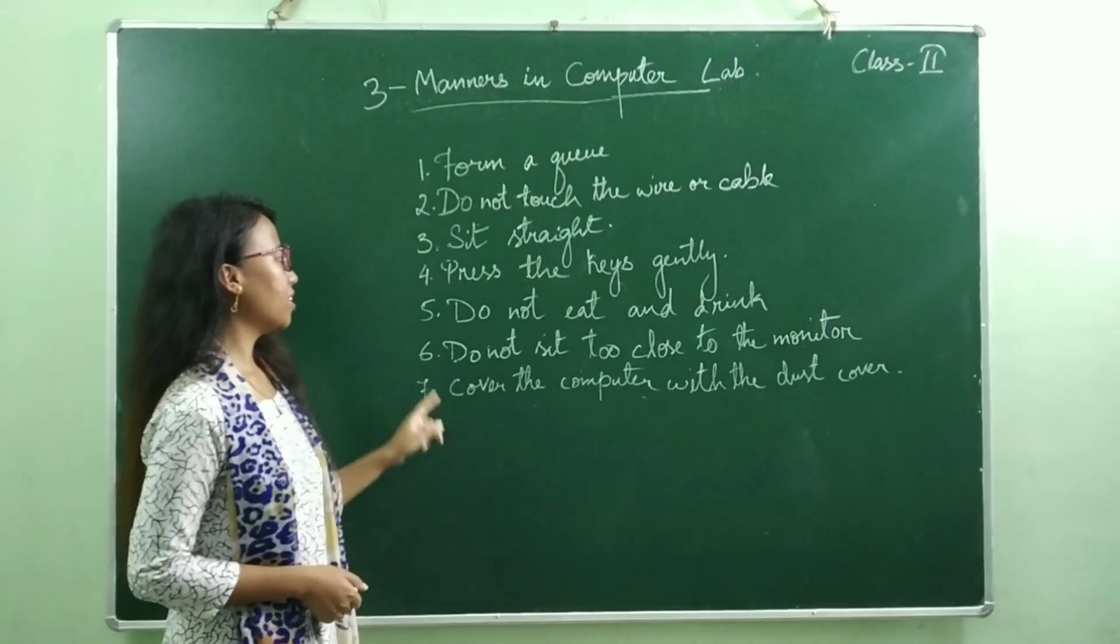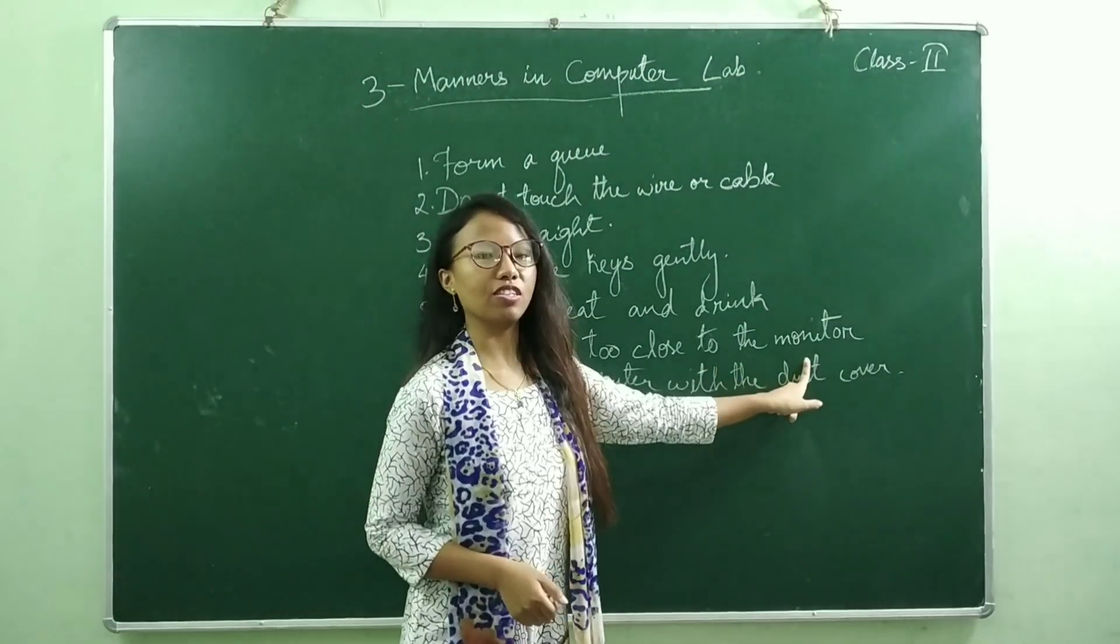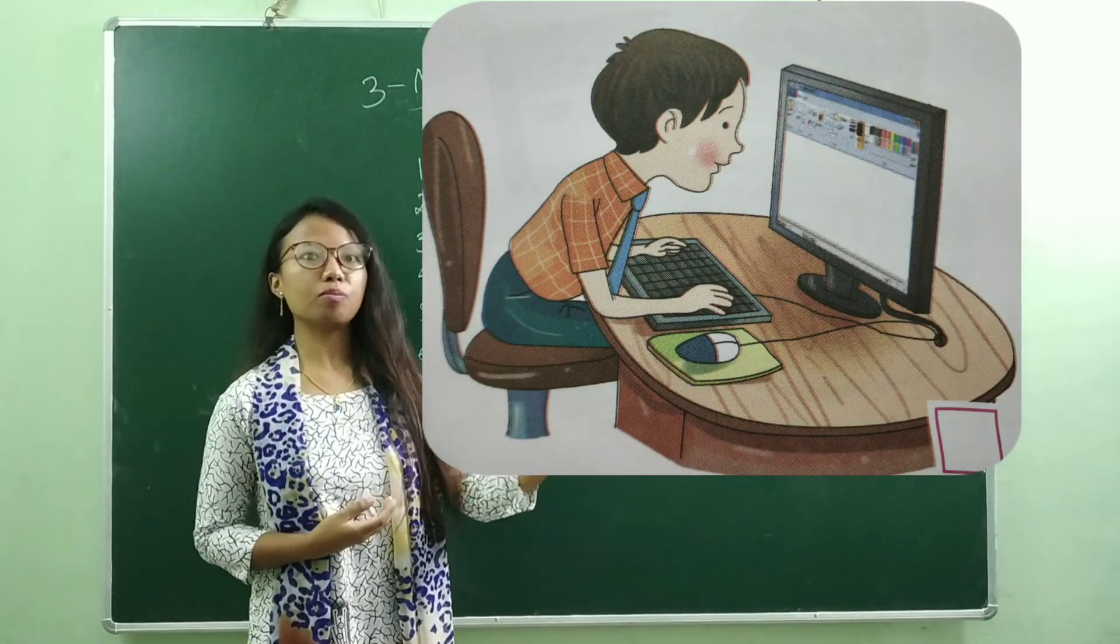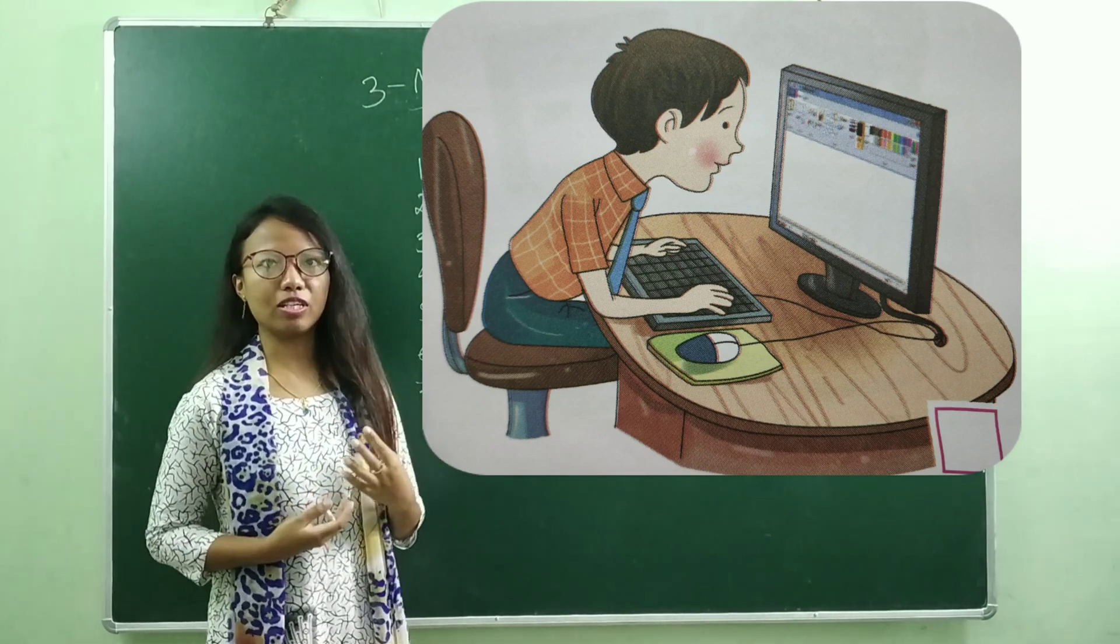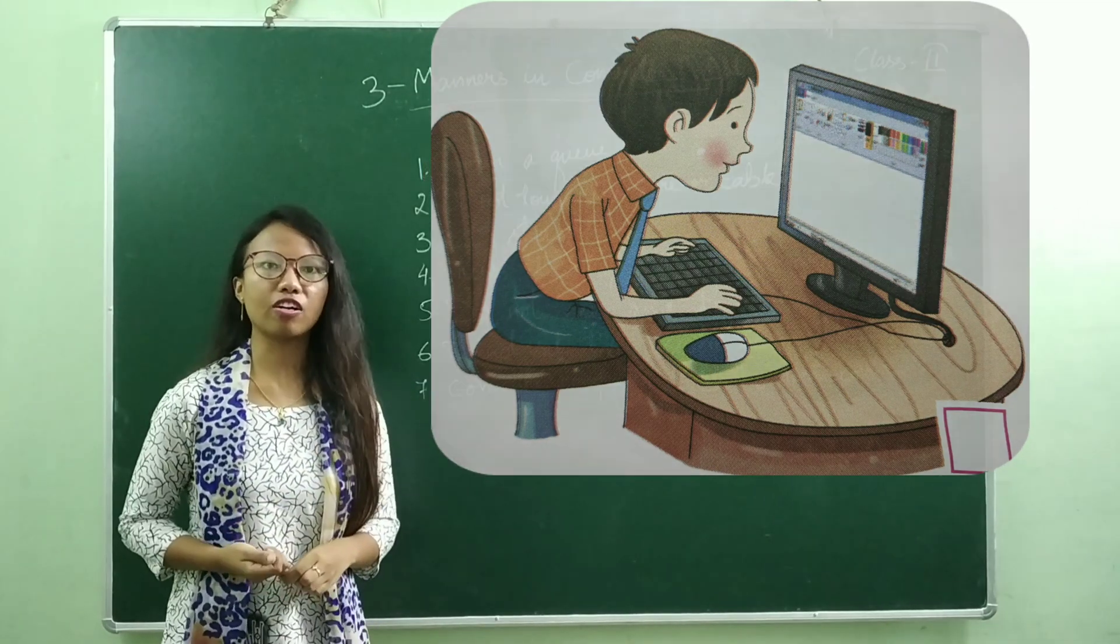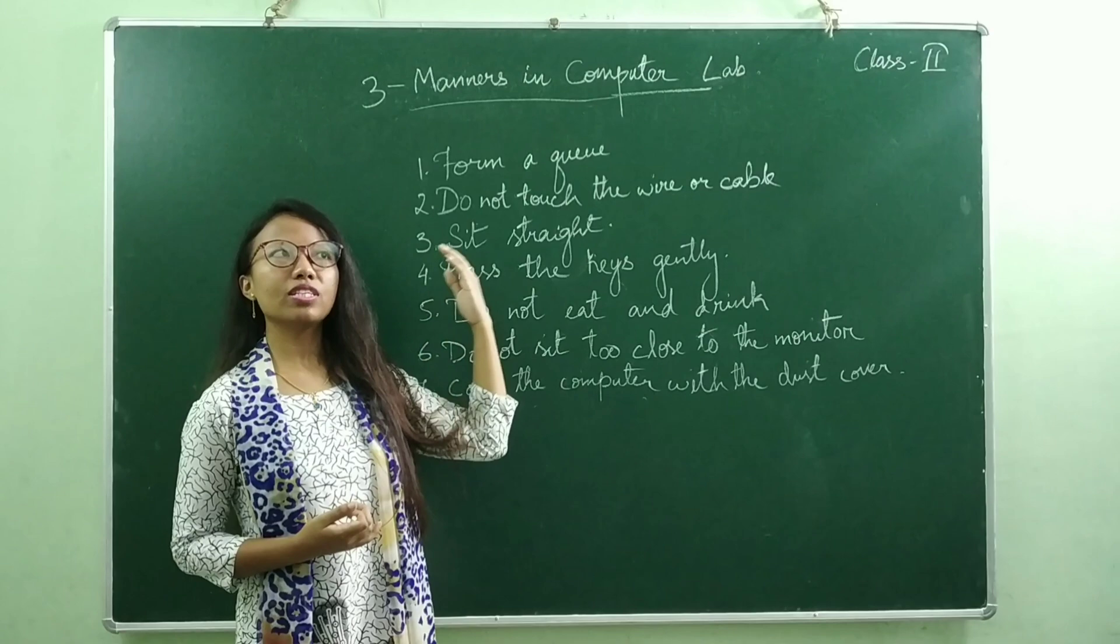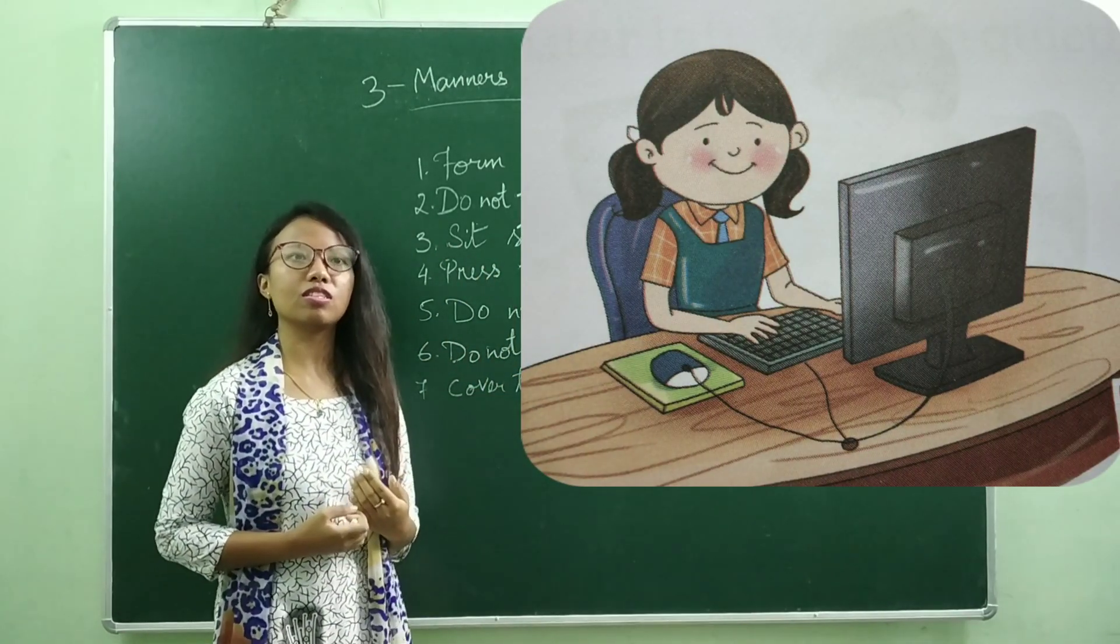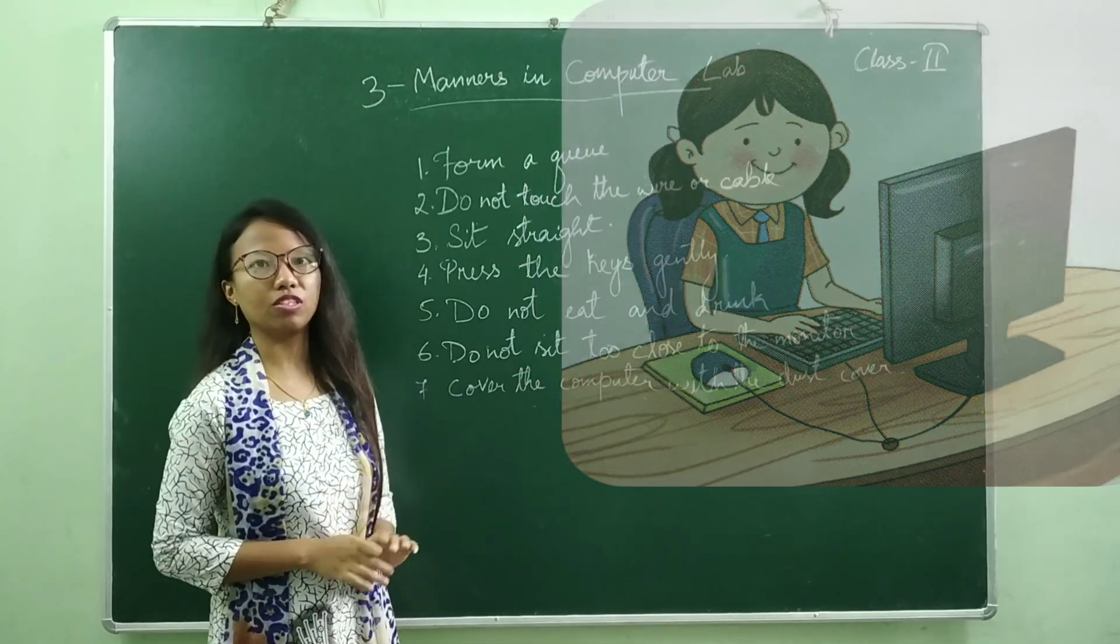Number six: do not sit too close to the monitor. When you sit too close to the monitor, the light that comes from the monitor screen may cause damage to our eyes. It is very harmful for our eyes. So you should always maintain some distance from the monitor screen while you are working on it.